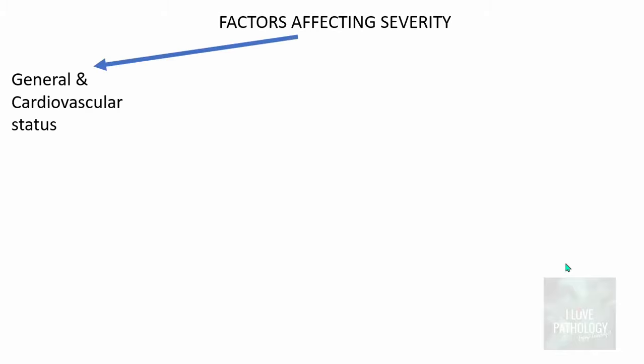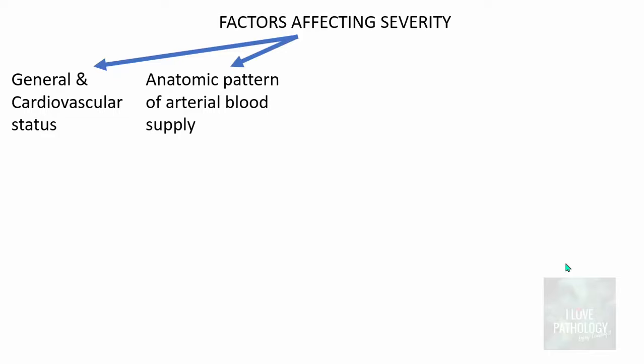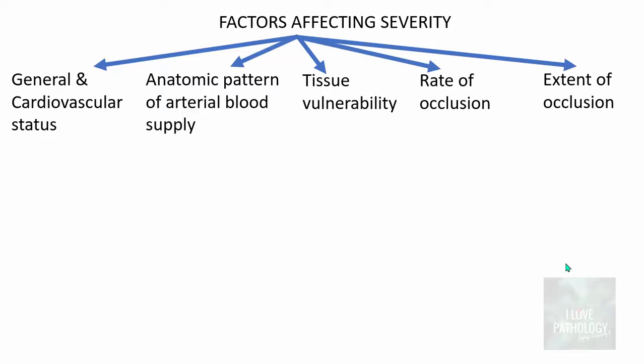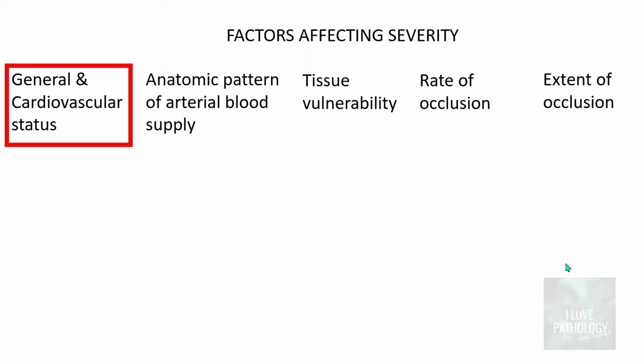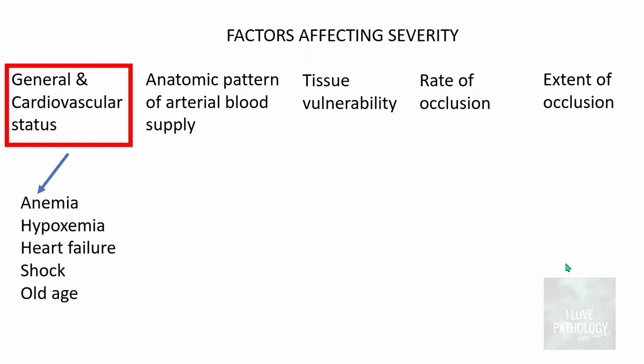Various factors affect the severity of infarction. These include general and cardiovascular status, anatomical pattern of arterial blood supply, vulnerability of the tissue, and rate and extent of occlusion. Regarding general and cardiovascular status: patients who are anemic, hypoxemic, in heart failure, in shock, or elderly are already compromised in terms of reduced oxygenation, making them more vulnerable to hypoxia and therefore more prone to infarction.